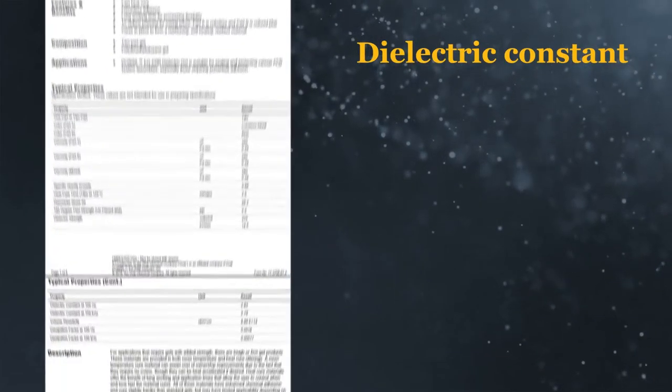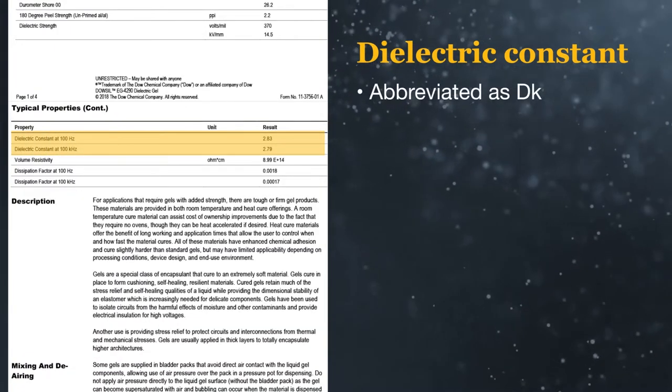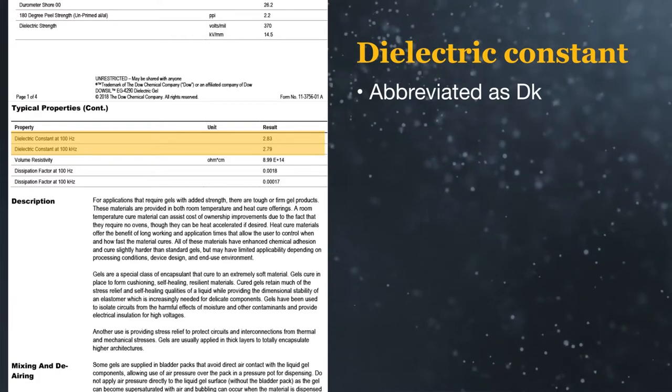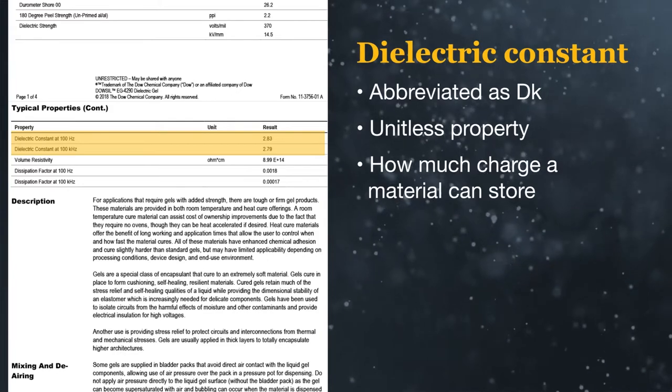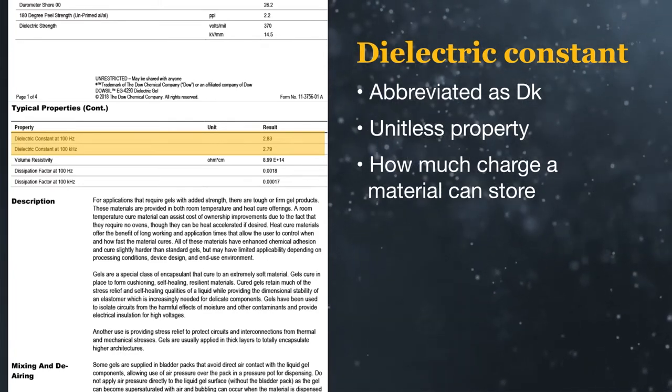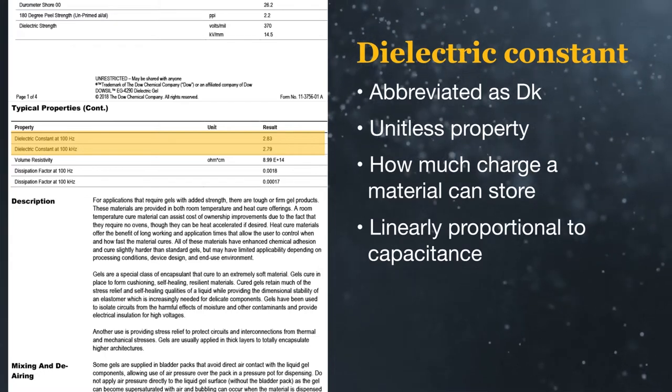The next dielectric property is dielectric constant, often shortened to DK, and also called relative permittivity. This is a unitless property that is a measure of how much electrical charge a material can build up or store compared to air and is directly proportional to capacitance.